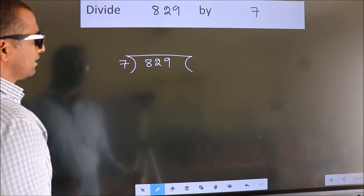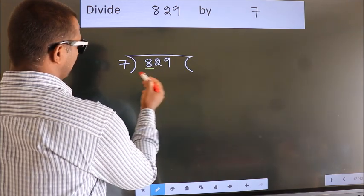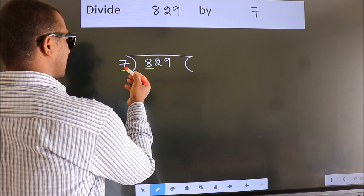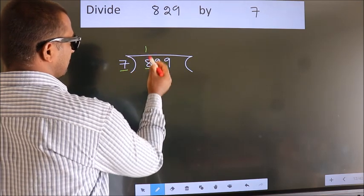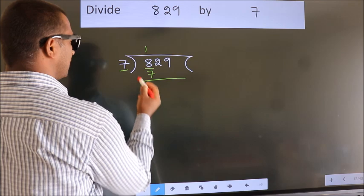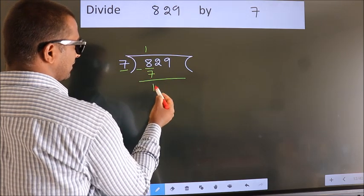Next, here we have 8, here 7. A number close to 8 in the 7 table is 7 once, which is 7. Now we should subtract. We get 1.